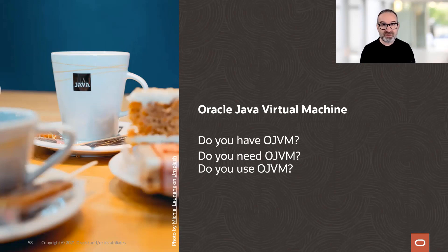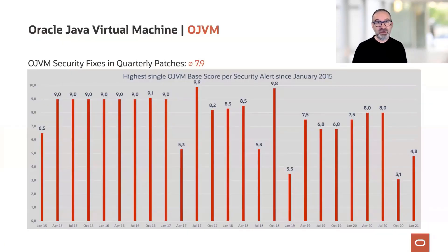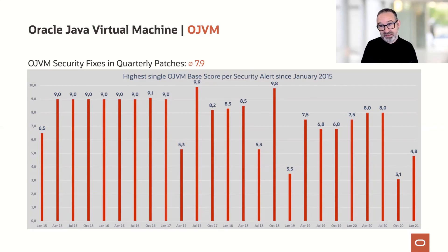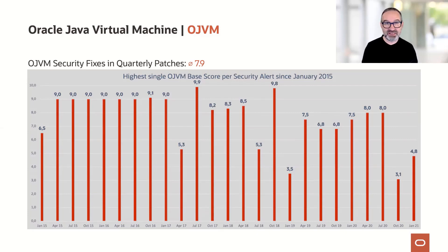The reason I'm insisting: if you have the Oracle Java Virtual Machine in your database, I went back and revisited all the security bulletins and security matrices back to January 2015. I took always the highest-scored OJVM vulnerability and put that in a slide. The average is almost a risk score of 8. There are some below, and recently there are only a 3.1 and a 4.8, but over time there are a lot of nine-ish risk scores for OJVM. In some bulletins there were also two or three OJVM fixes included — I took just the highest here to scare you a bit.